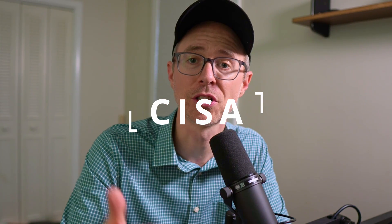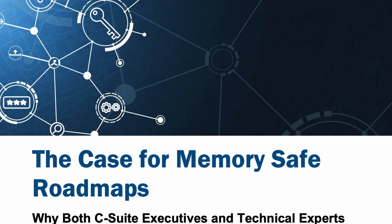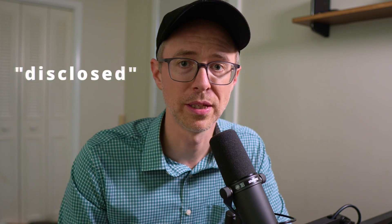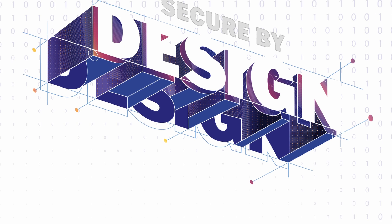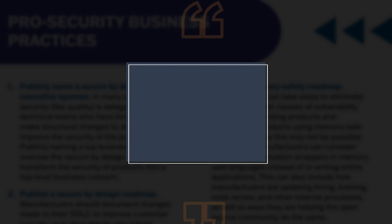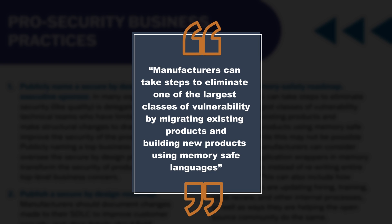A paper was published the other day by the CISA, or U.S. Cybersecurity and Infrastructure Agency, and the paper is called 'The Case for Memory Safety Road Maps.' Essentially, memory safety vulnerabilities are the most common type of disclosed software vulnerabilities — the errors are well known, they're common, and they're routinely exploited. Their guidance is that organizations should be prioritizing design and development practices that implement memory safe languages. In another paper titled 'Secure by Design,' published in October, they stated manufacturers can take steps to eliminate one of the largest classes of vulnerability by migrating existing products and building new products using memory safe languages.